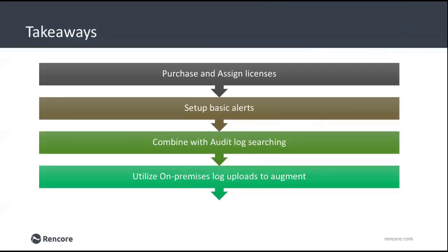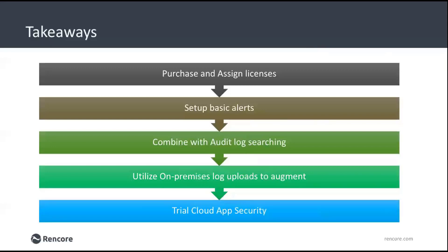Set up some basic alerts — not just in the Security and Compliance Center, but let it log information and then create alerts based on what you find. If you're a global organization, augment with IP address ranges and block unknown IPs. Combine that with the standard Office 365 audit log search to create alerts — these two components work together. Also utilize on-premises log uploads to augment data, and trial Cloud App Security. If you want full security management, take your existing E3 license, add E3 Plus Security and Cloud App Security — you won't need the ASM license separately since Cloud App Security supersedes it.